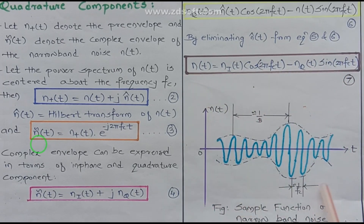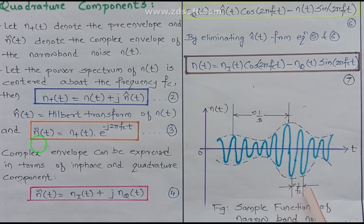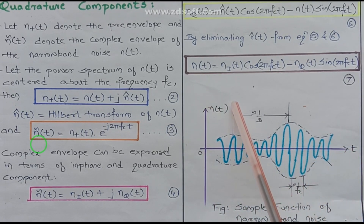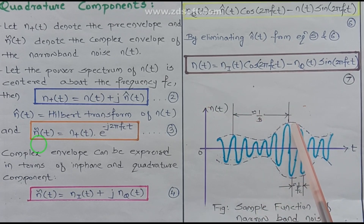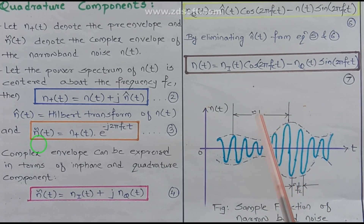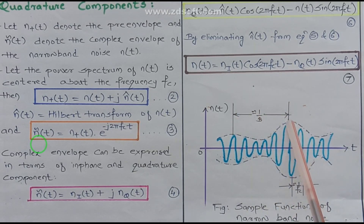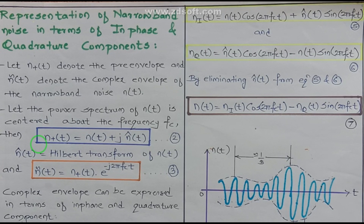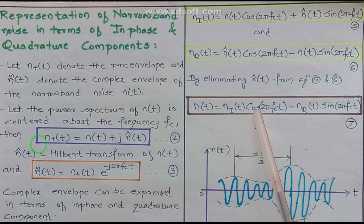This is the figure of the sample function of your narrow band noise. The distance between adjacent peaks corresponds to one period of fc. This is the noise in the time domain. The difference between the minimum peak and maximum peak value is given by 1 over the bandwidth, representing the difference between maximum and minimum peaks.